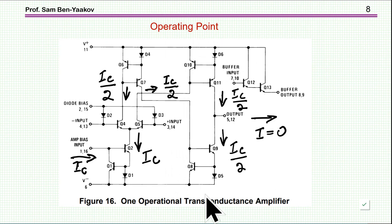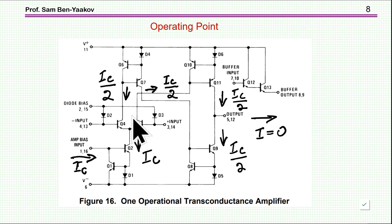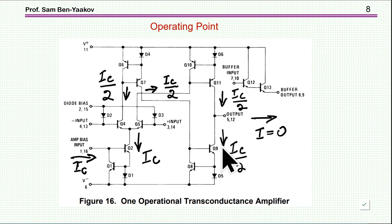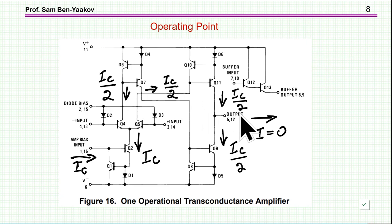At the operating point, the bias current IC enters and is split equally — IC/2 to each collector of the differential pair. Each IC/2 is then reflected through the current mirrors to the output. Since these mirror currents are equal and opposite, they cancel, giving zero output current at the quiescent point.